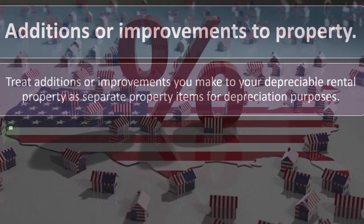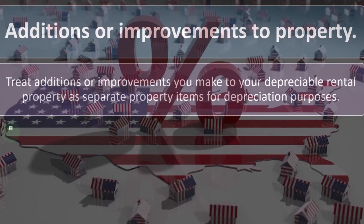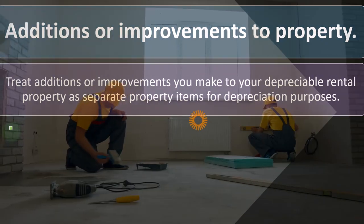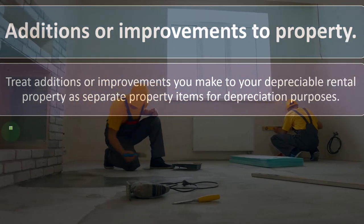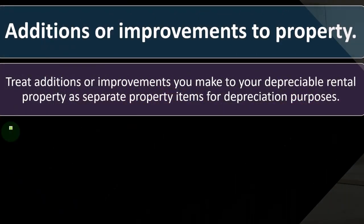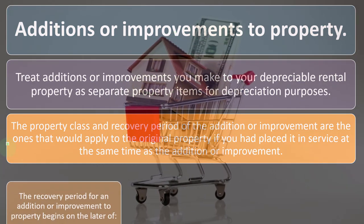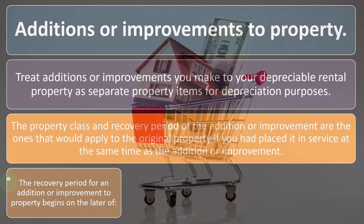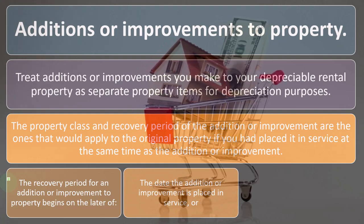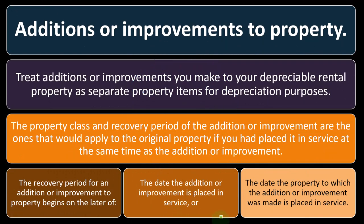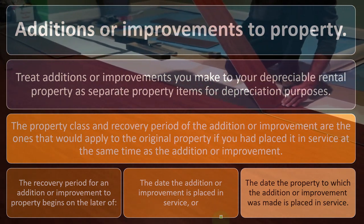Additions or improvements to your depreciable rental property are treated as separate property items for depreciation purposes. For example, if you add a new roof — which is not a repair — you cannot expense it immediately; instead, you put it on the books as a new asset item, separate from the original building already on the books. The property class and recovery period of the addition or improvement are those that would apply to the original property if placed in service at the same time as the addition or improvement. The recovery period for the addition begins on the later of the date the addition is placed in service, or the date the original property was placed in service.